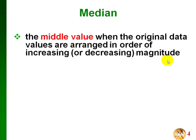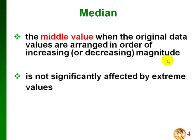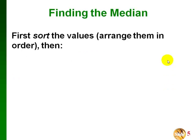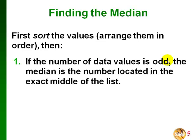The median is the middle value when the original data values are arranged in order of increasing or decreasing magnitude — usually from smallest to largest. The nice thing about the median is that it's not significantly affected by extreme values, extremely large or extremely small. To find the median, we first sort the values, then we do two different things depending on whether we have an odd or an even number of data values.